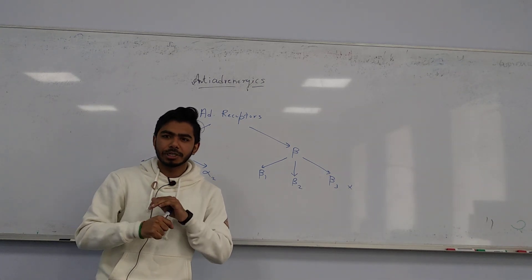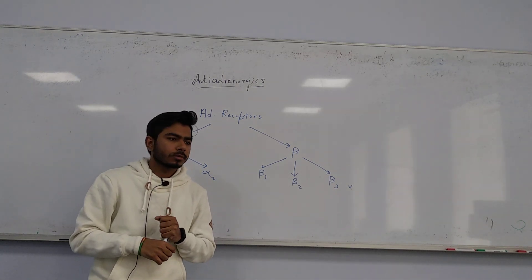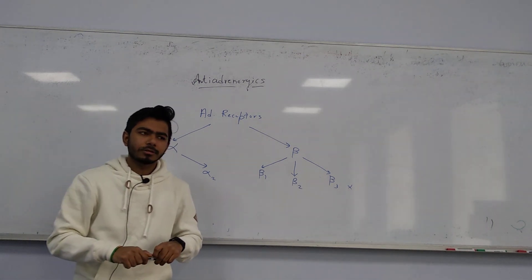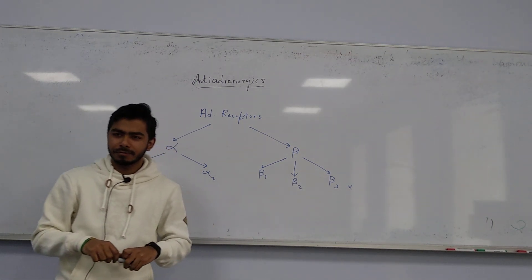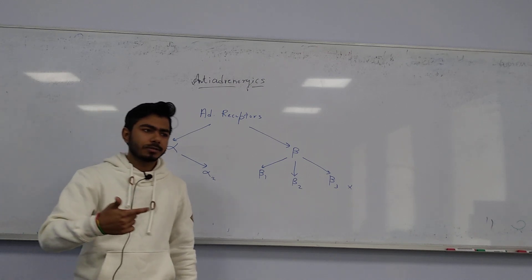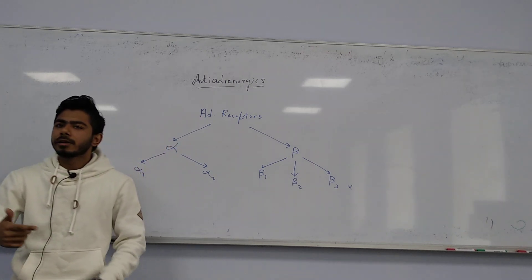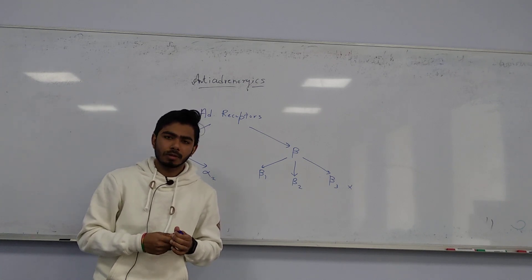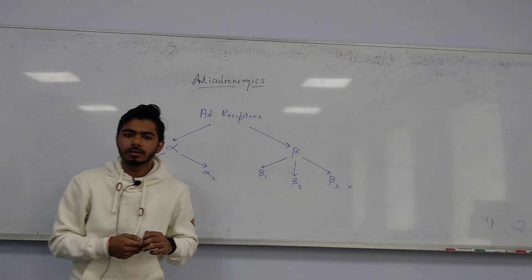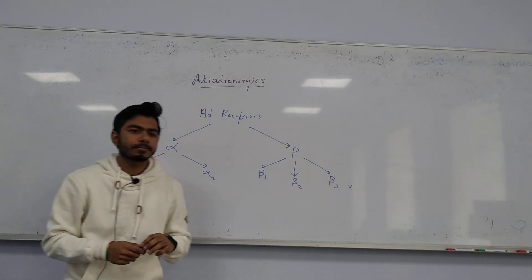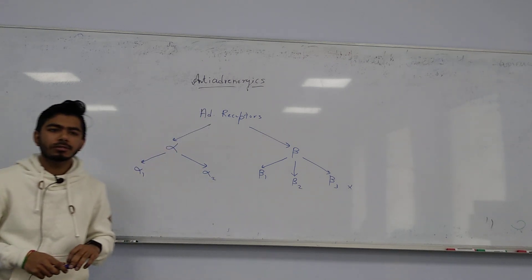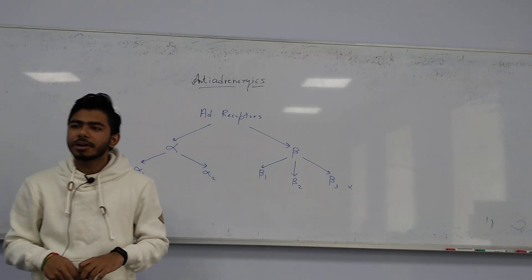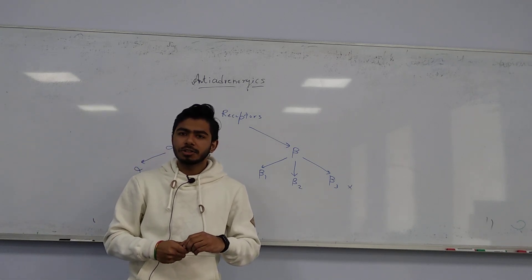Isoprenaline was a beta 1 and beta 2 stimulator. Dobutamine was beta 1 selective, used in acute hypotension. In the alpha category, alpha methyl dopa and clonidine were alpha 2 agonists — they apply the brakes on the sympathetic system.